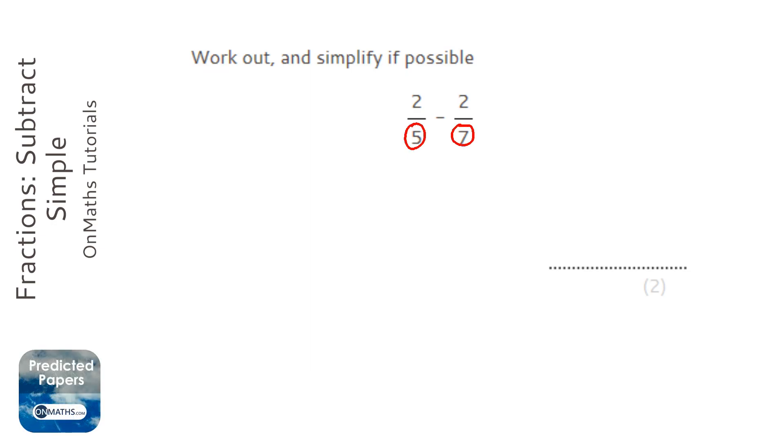So 5 and 7, there isn't a quicker way or easier number to pick, other than by just multiplying together, making them both 35.